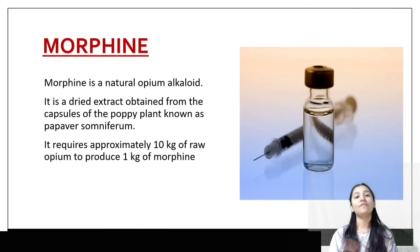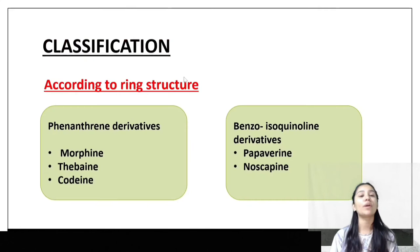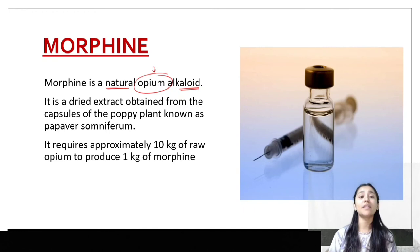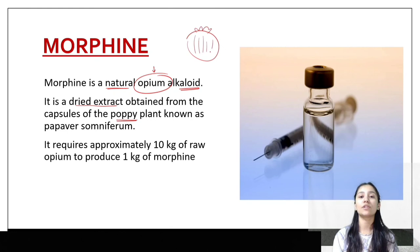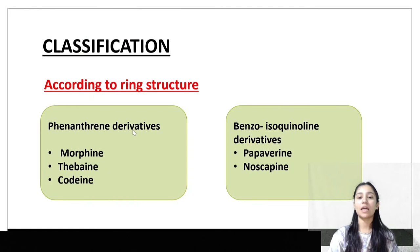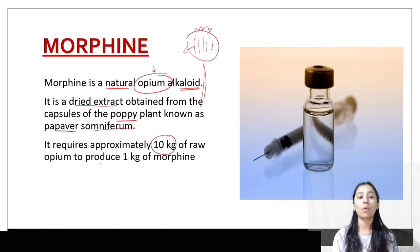Morphine is a dried extract obtained from the capsules of the poppy plant, Papaver somniferum. The poppy plant has a green capsule, and if we make incisions, we can remove the dried extract to get raw opium. It requires approximately 10 kg of raw opium to produce 1 kg of morphine.